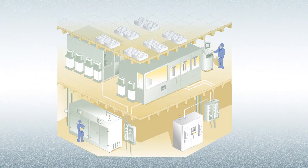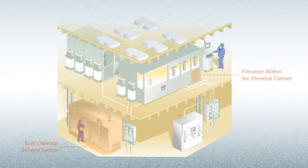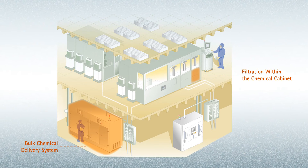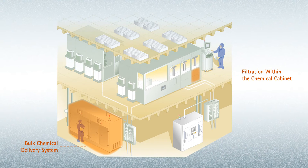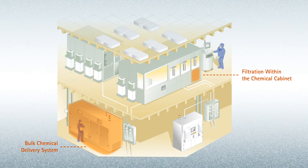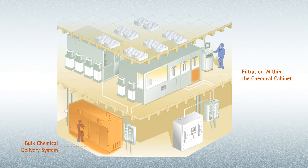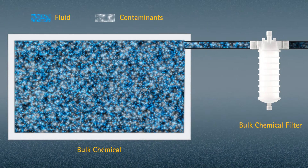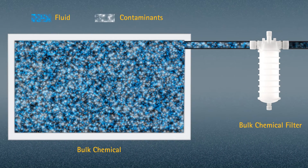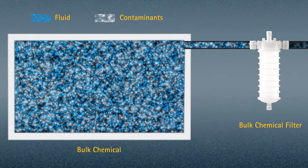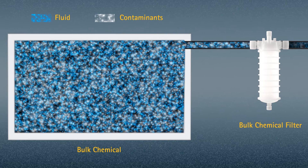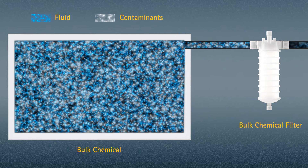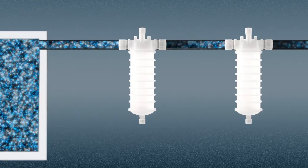Flow plane's reduced size also enables new filtration paradigms required for next generation processes. Typically, process chemistries are first filtered in a bulk chemical area, and then again within the chemical cabinet in the process tool, and yet again before being dispensed onto the wafer.